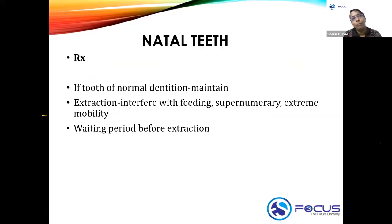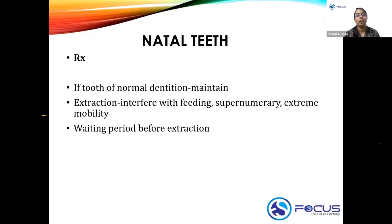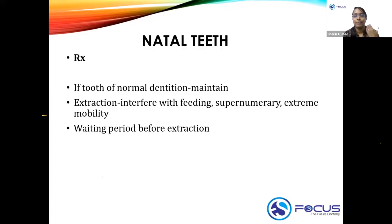Natal teeth are teeth of the normal primary dentition that have erupted prematurely, so you should try to maintain them. Do not extract a natal tooth unless it is interfering with feeding, it is a supernumerary tooth, or it has extreme mobility. An extremely mobile tooth in an infant poses a risk of aspiration, which is why extraction is considered in that case.